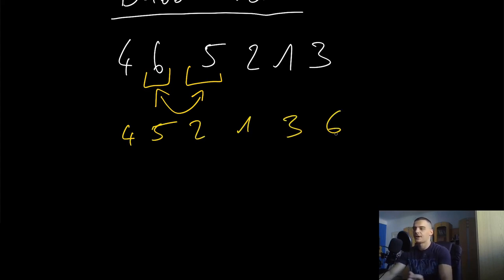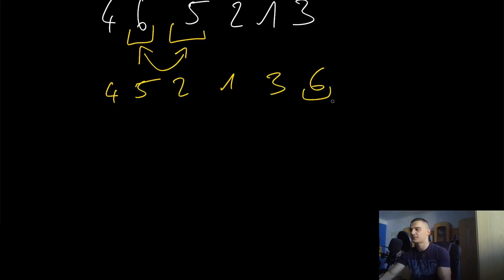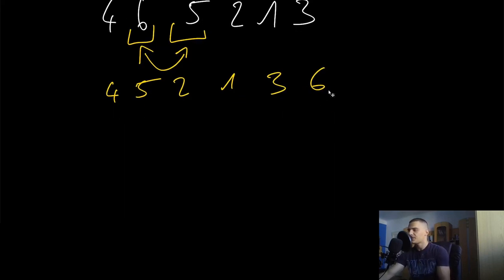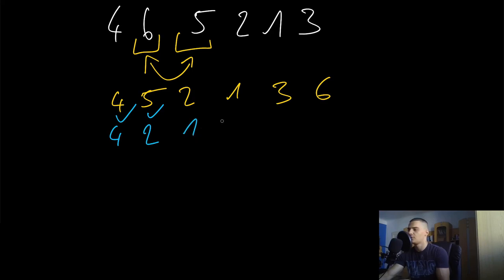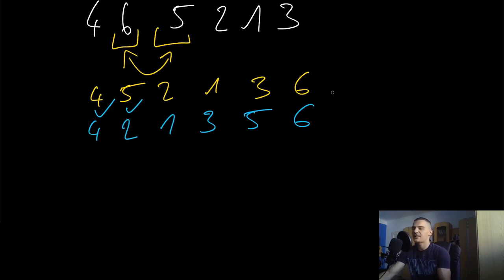This list is not fully sorted yet — only the element six is in the right position. So we repeat the process: four and five are fine, but five and two are not, giving us [4, 2, 5, ...]. We keep repeating, and the question is how many times we need to do this to sort the whole list.